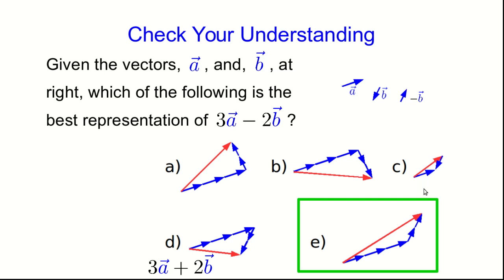You might have been tempted by d but note d isn't 3a minus 2b, it's 3a plus 2b. b points in that direction. And there are two of those here.